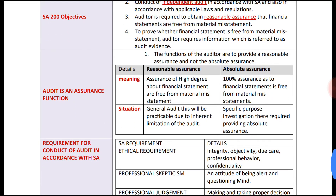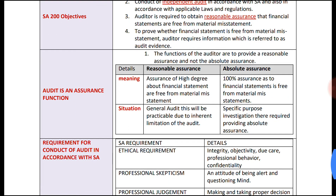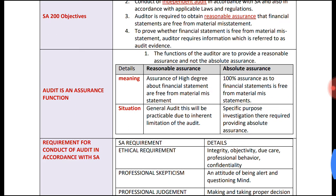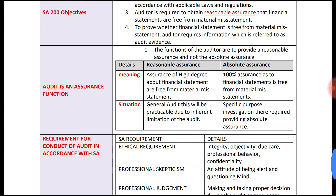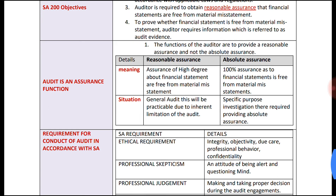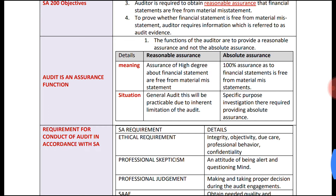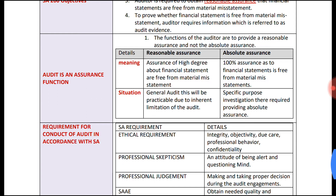A key point to note: audit is an assurance function. The function of the auditor is to provide reasonable assurance, and not absolute assurance. The main motive of audit is to provide reasonable assurance. Assurance is of two types — let us go through the difference between reasonable assurance and absolute assurance.